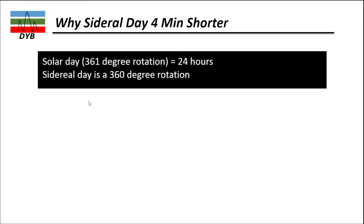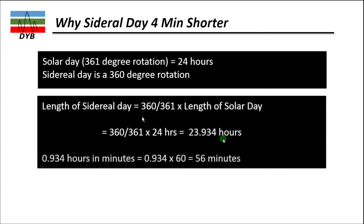We can calculate the length of the sidereal day as: (360 / 361) × length of the solar day. Since the solar day is 24 hours, this gives us 23.934 hours, which when converted into hours, minutes, and seconds gives exactly 23 hours 56 minutes and 4 seconds.